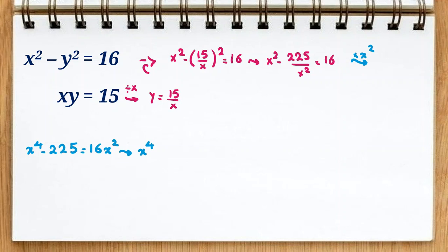Now we take all things to the left hand side: x to the 4 minus 16 x squared minus 225 equal to zero. So here I consider x squared equal to, for example, z. So z squared minus 16z minus 225 equal to zero.